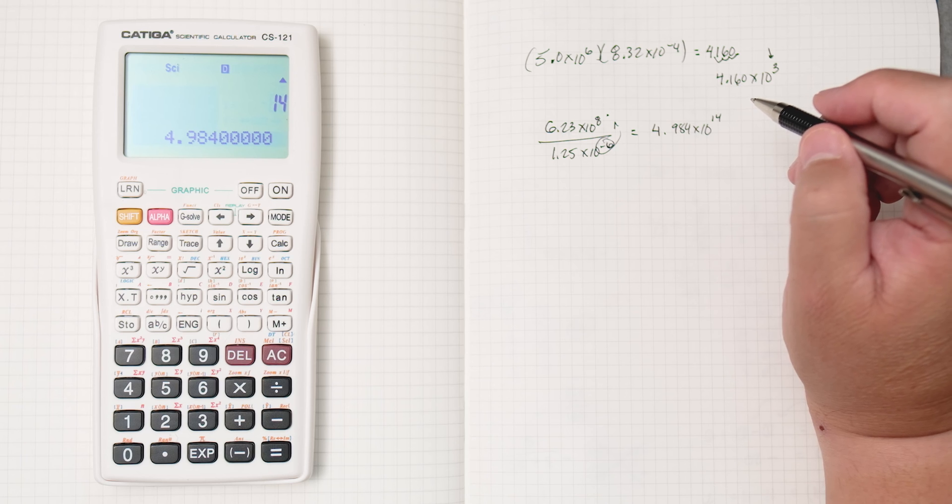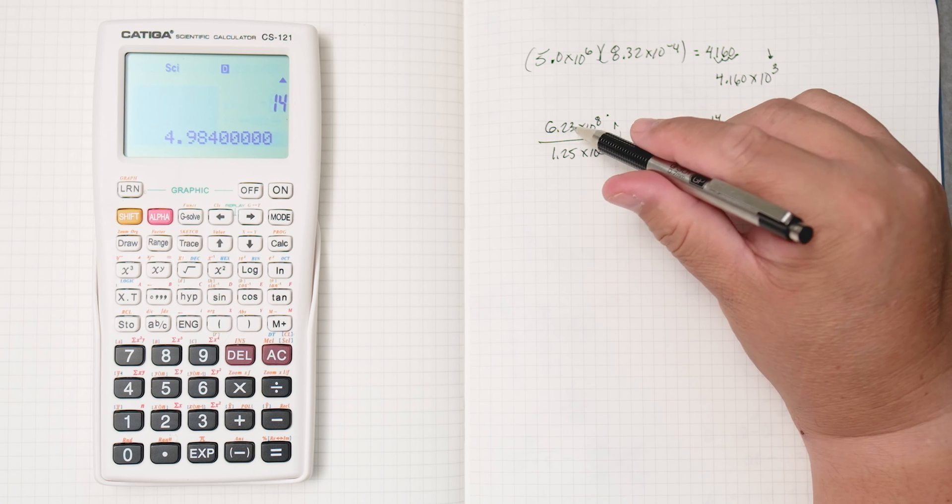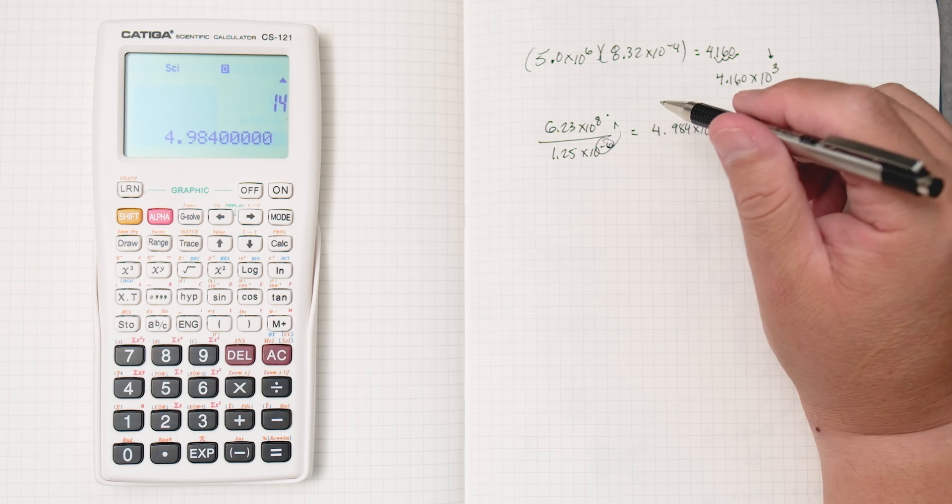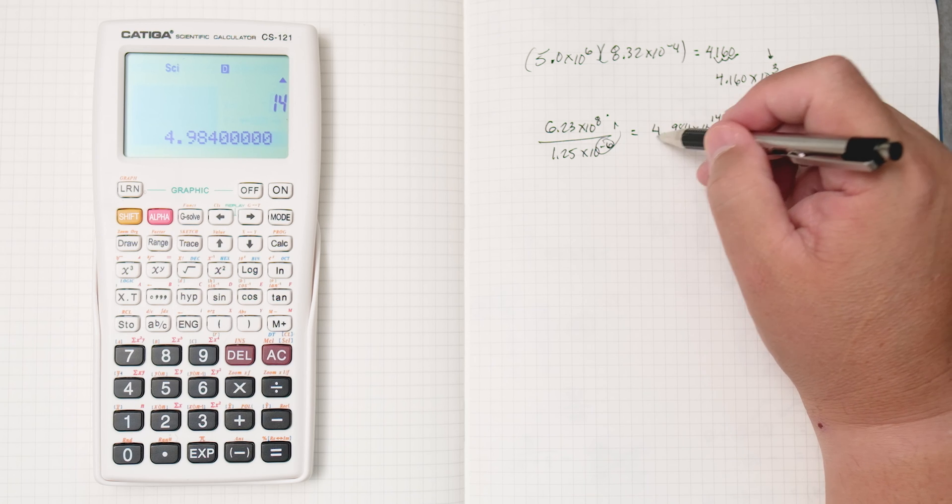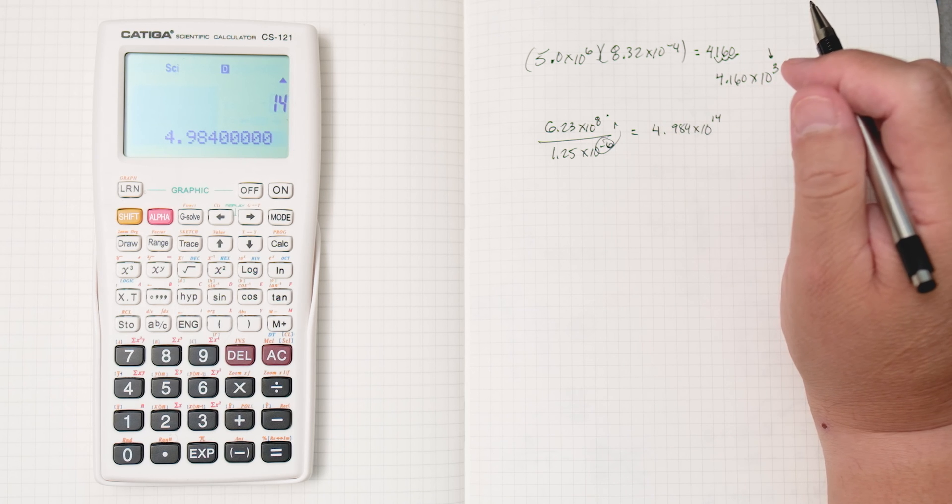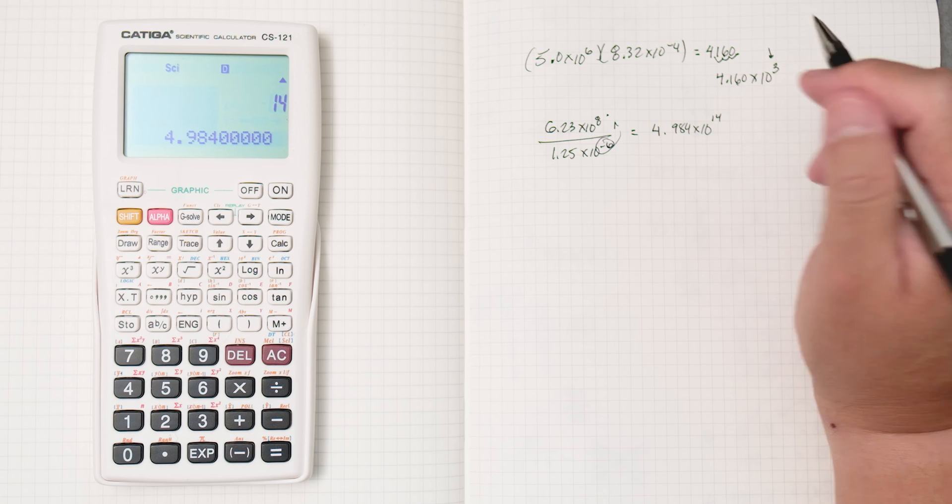One thing to note when you're doing scientific notation is the significant digits. That's going to be with your teacher.